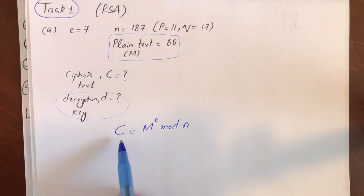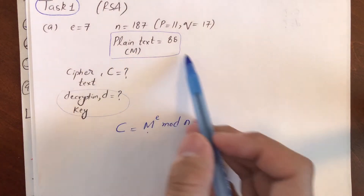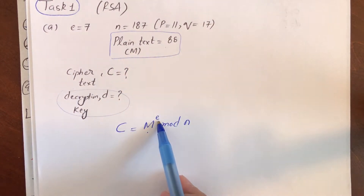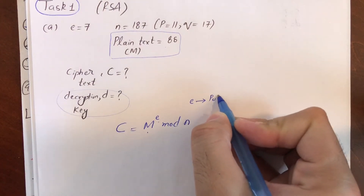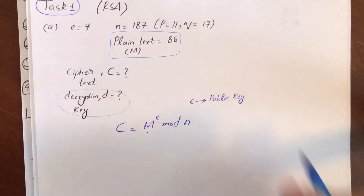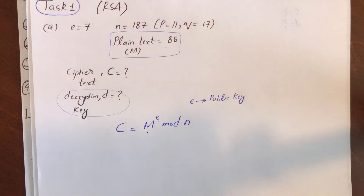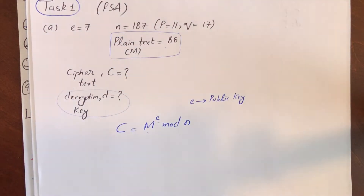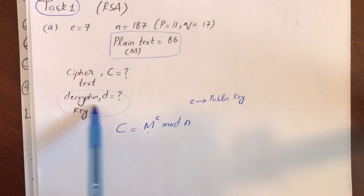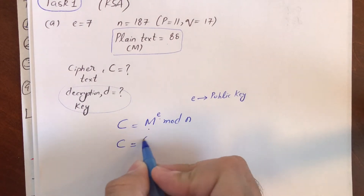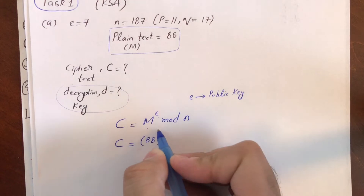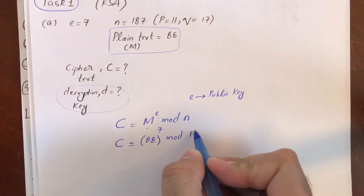Can we calculate c? We have m, the plaintext message. We have e, which is the encryption key — e is basically the public key of the receiver. In asymmetric encryption, we encrypt the data using the receiver's public key, so the receiver can use his private key or decryption key to decipher the data. N is also provided. So: c = 88 raised to power 7, modulus n = 187.